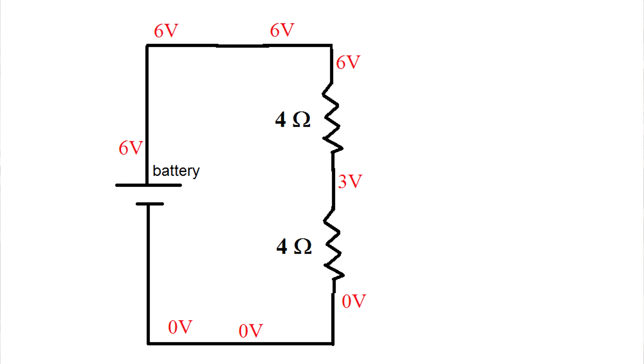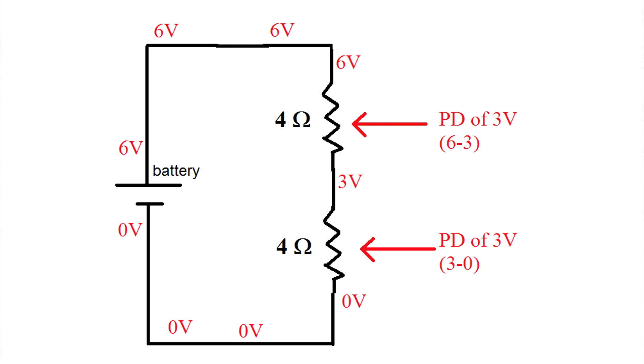So each resistor has a potential difference of three volts, because if you compare each side of the resistor, the difference in potential is three volts. Six minus three is three, and three minus zero is also three.